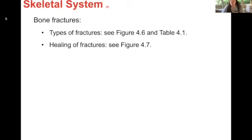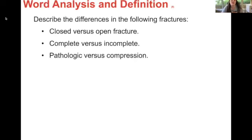Bone fractures — the slide tells you to look in your book at the pictures. For those of you who don't have a book, let me know and I can take pictures and post them. Word analysis and definition: closed versus open fracture. Closed fracture means what was broken stayed inside. Open fracture means it broke through the skin. Any broken bone I have seen so far, thankfully, has been a closed fracture.